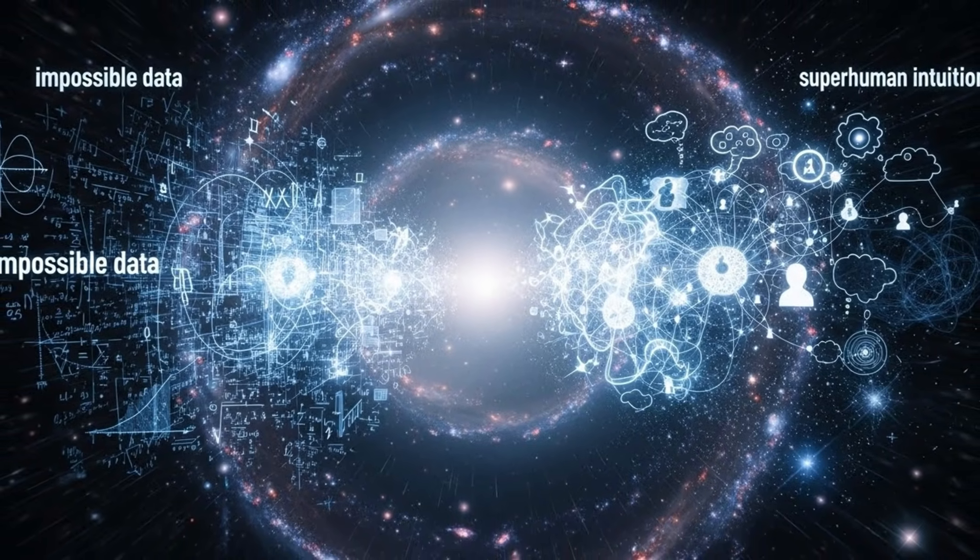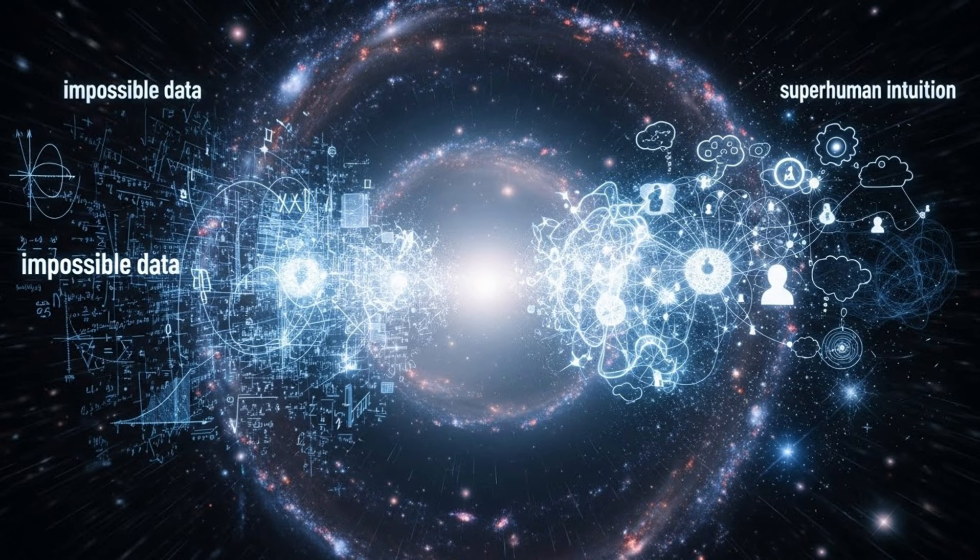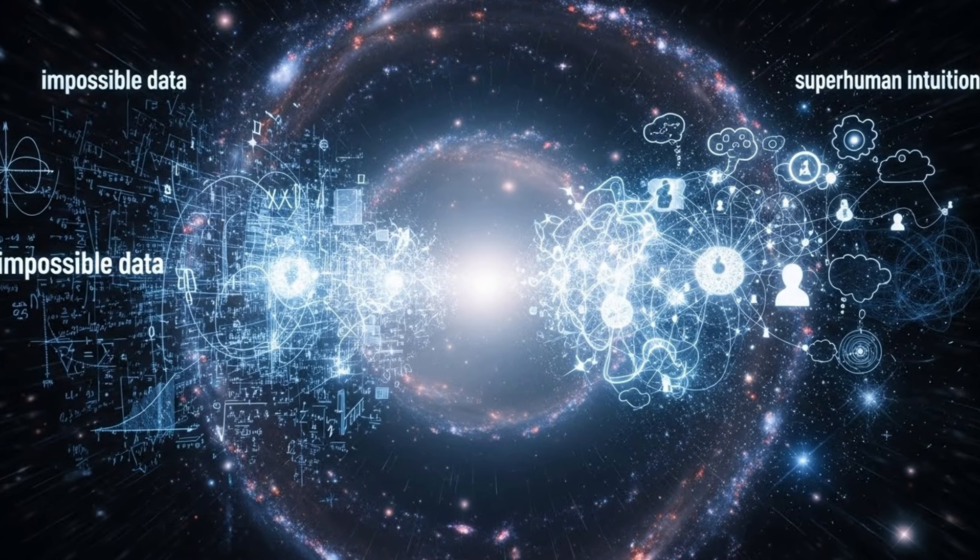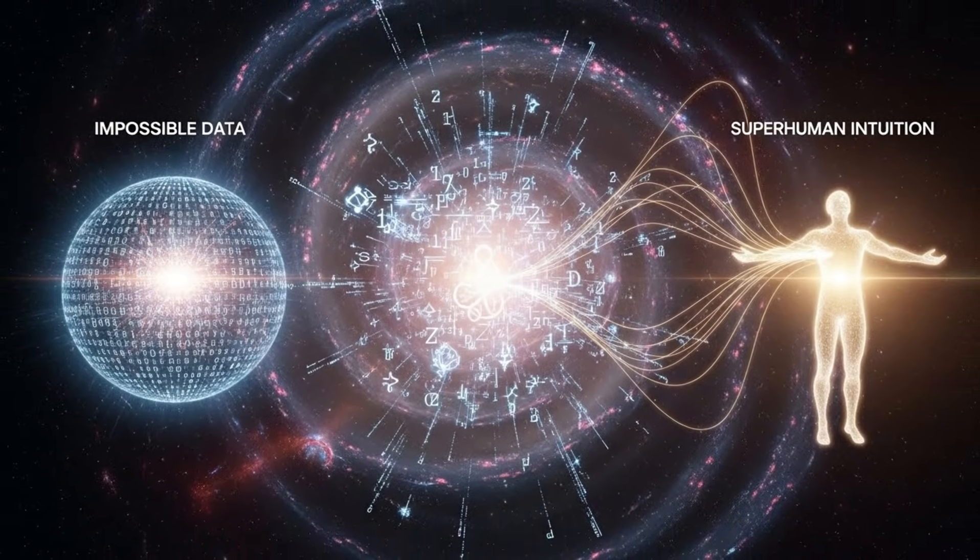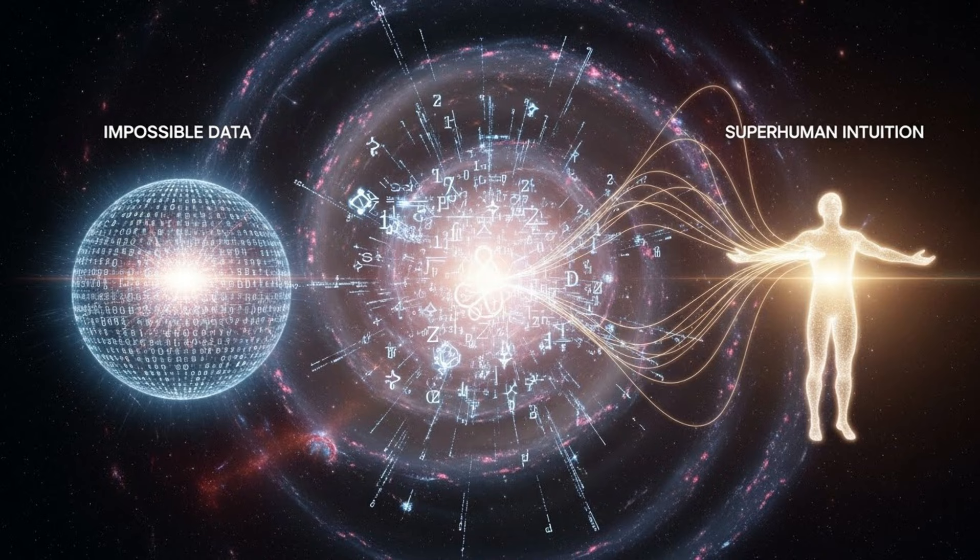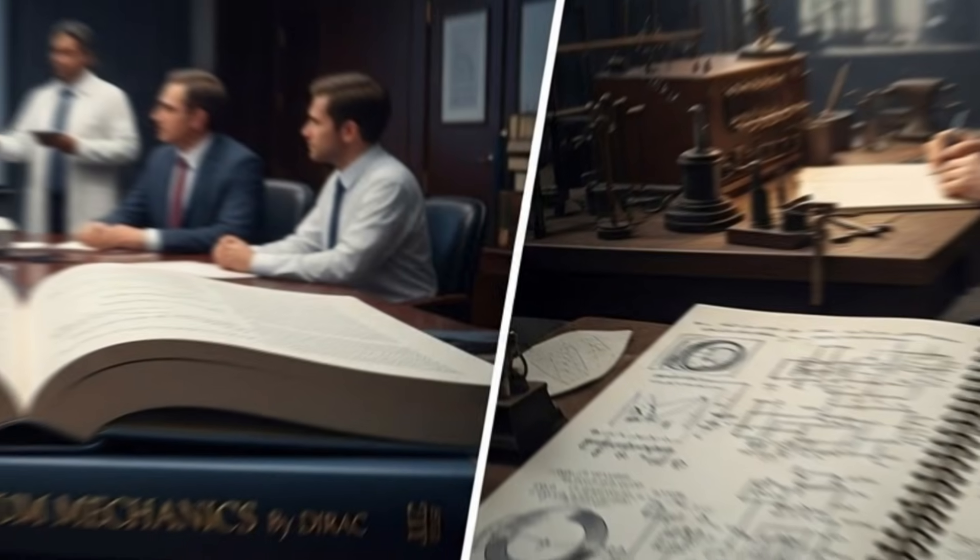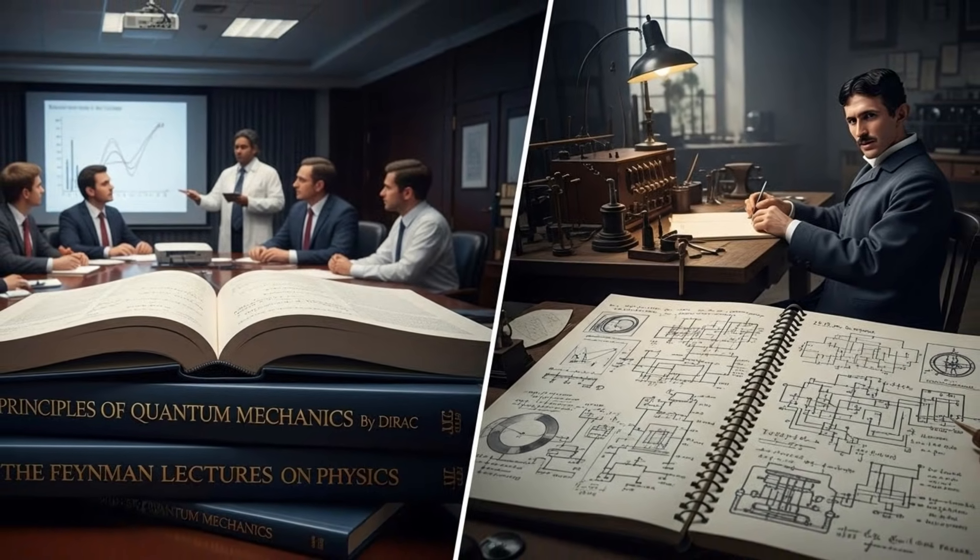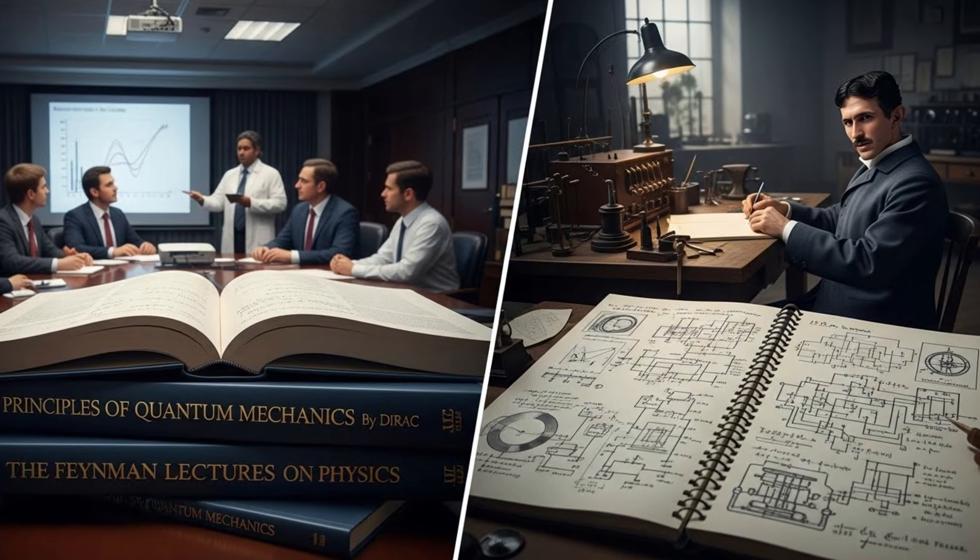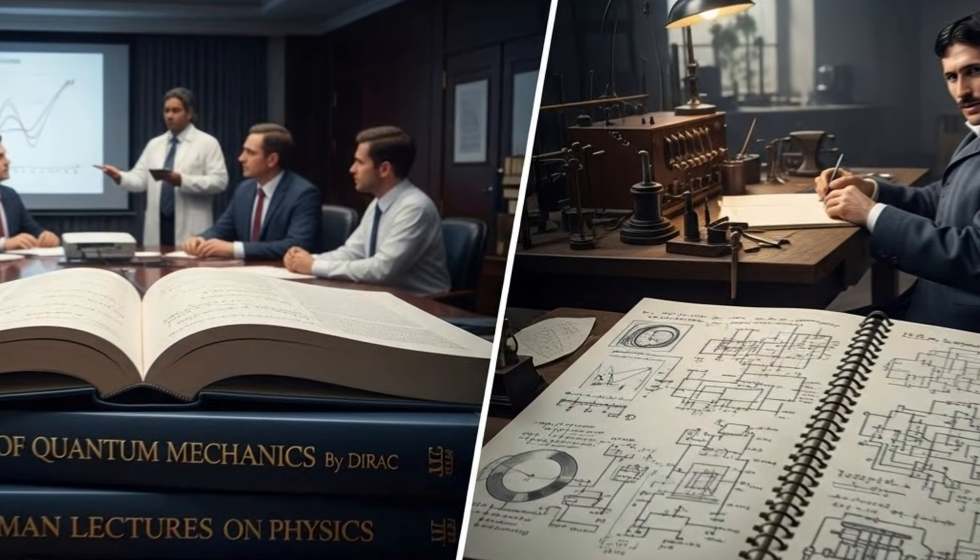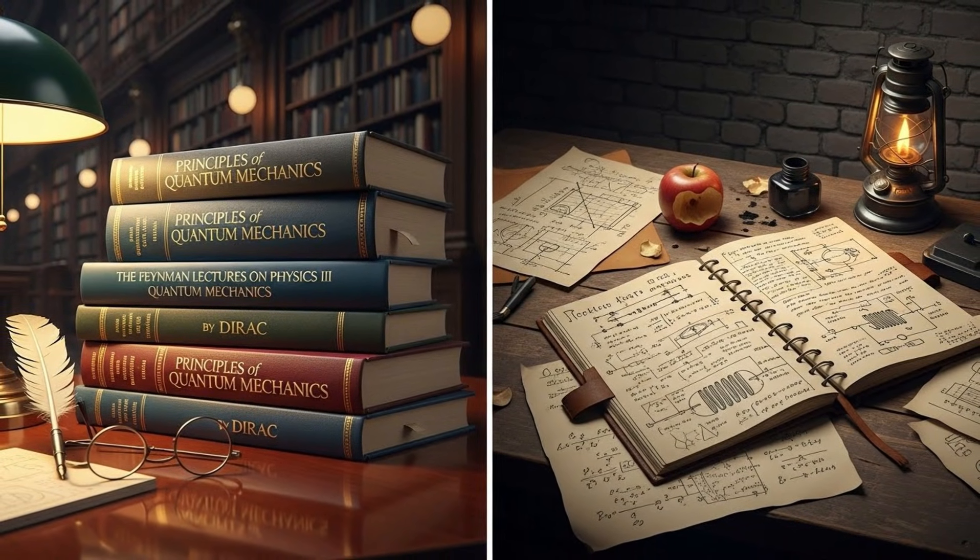Because here's the thing about quantum computers. They don't solve problems the way classical computers do. They don't calculate step by step. Instead, they explore all possible solutions simultaneously. Existing in a superposition of states until the answer collapses into clarity. Tesla's mind may have worked the same way. He didn't think in proofs. He thought in resonances. In symmetries. In the hidden harmonics beneath the surface of the visible world. And now, a century later, a machine built on those same quantum principles has read his notes. And recognized itself.